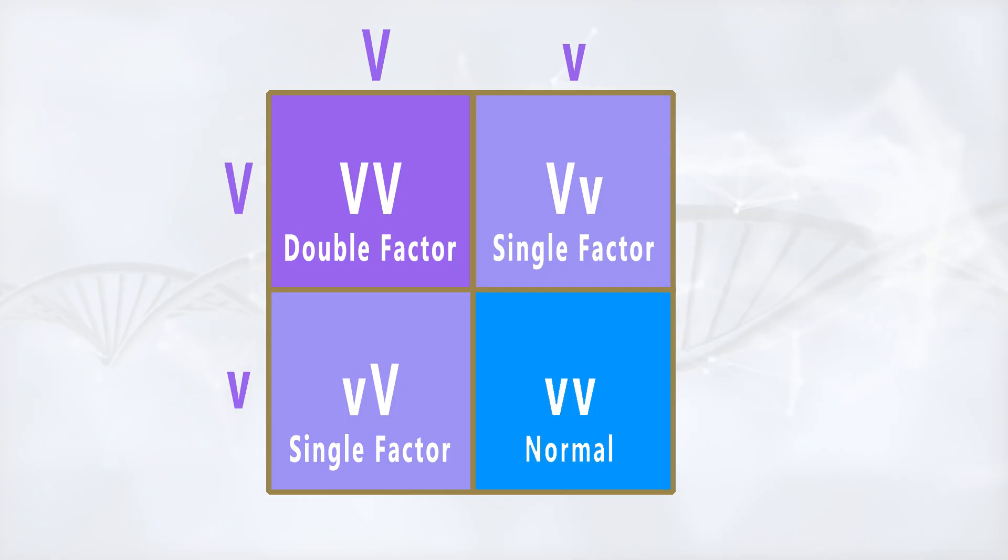The violet factor is semi-dominant, meaning it's dominant over the normal color. With two copies of the gene, the budgie's violet will be deeper and richer, while a single copy produces a softer, lighter violet hue.